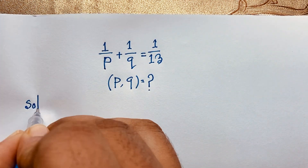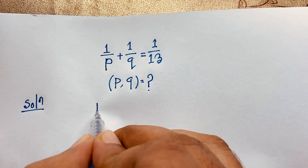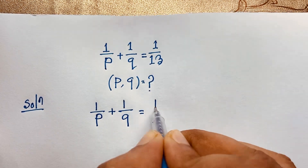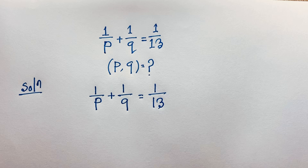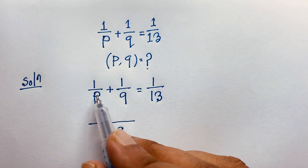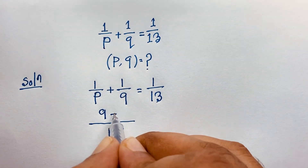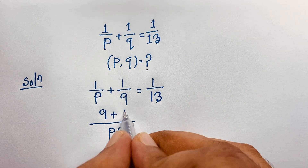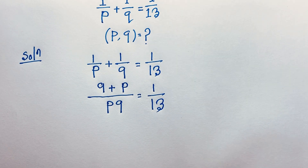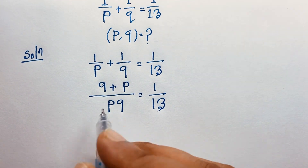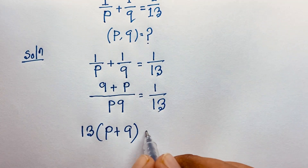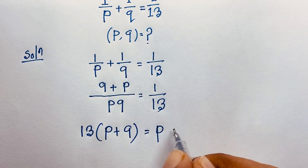Our question is 1 over P plus 1 over Q is equal to 1 over 13. Now the least common denominator is PQ, so this gives us Q plus P over PQ is equal to 1 over 13. Cross-multiplying, we get 13 times (P plus Q) equals PQ.